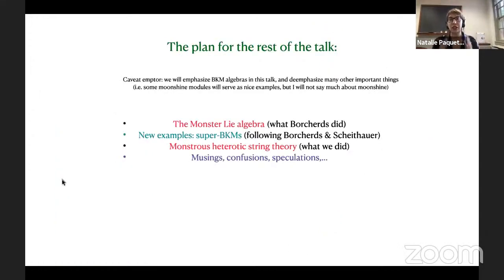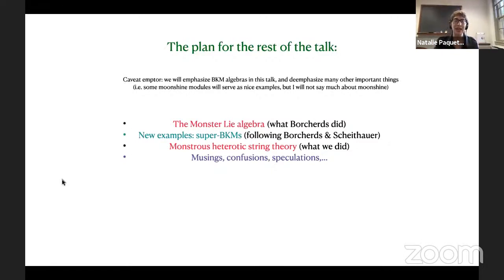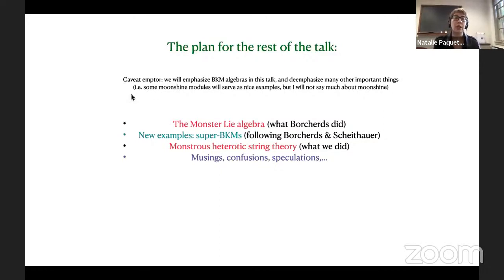The plan for the rest of the talk is as follows. I'll be focusing on the appearance of Borcherds–Kac-Moody algebras — which I'll abbreviate as BKM — in certain low dimensional string compactifications. As I mentioned, we're motivated by many other considerations and connections to mathematics, including interesting connections with moonshine that I'll largely de-emphasize in this talk. You can take some of the moonshine modules as nice examples, and there are other nice examples that have nothing to do with moonshine.